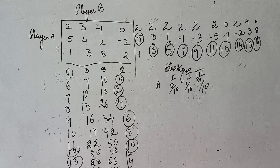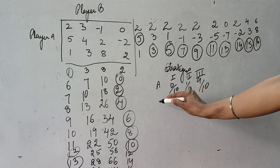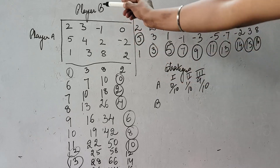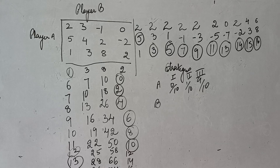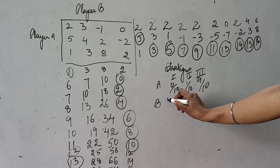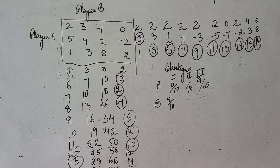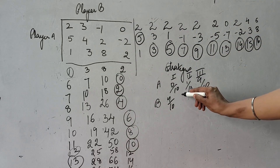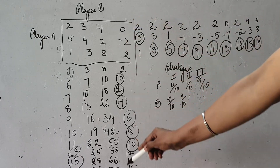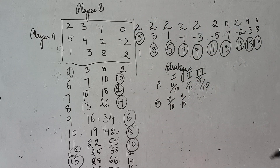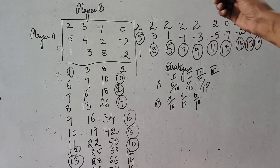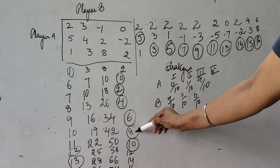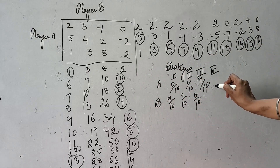Now do the same for player B. Probability that player B will choose the first strategy: there are 4 circles, so 4/10. In the second column there is no circle — 0/10. In the third column, again no circle — 0/10. For the fourth strategy of B: count 1, 2, 3, 4, 5, 6 circles — so it is 6/10.